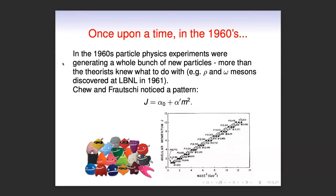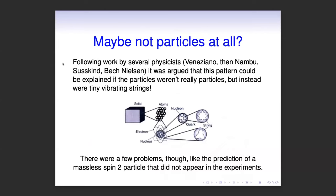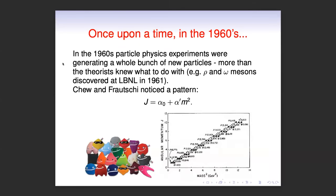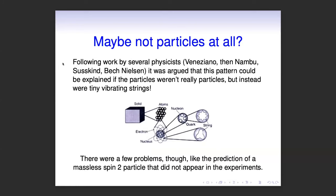Nobody really knew what was going on with these particles. There was this really cool idea that a few people came up with — Veneziano, and then later there was work by Nambu, Susskind, and Holger Beck-Nielsen. The idea was: what if they weren't actually particles? What if they were little vibrating strings? You can actually show that this kind of relation comes out very naturally. So they got hard to work on this idea — these little quantum strings that vibrate — and what we're seeing as different particles are just different vibrational modes of these little strings.